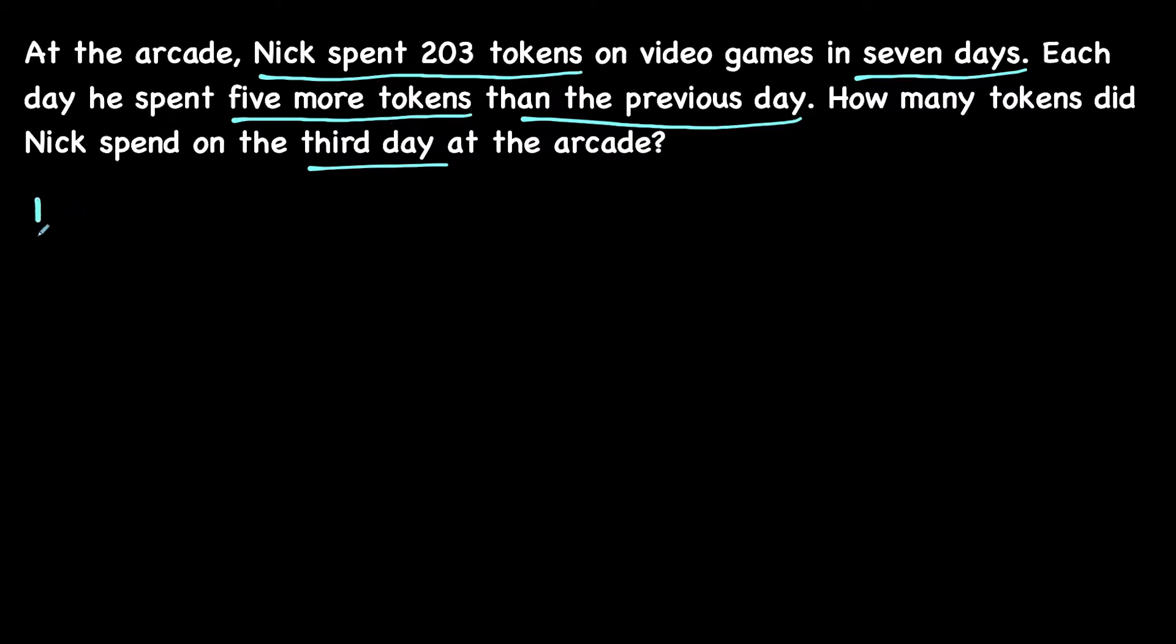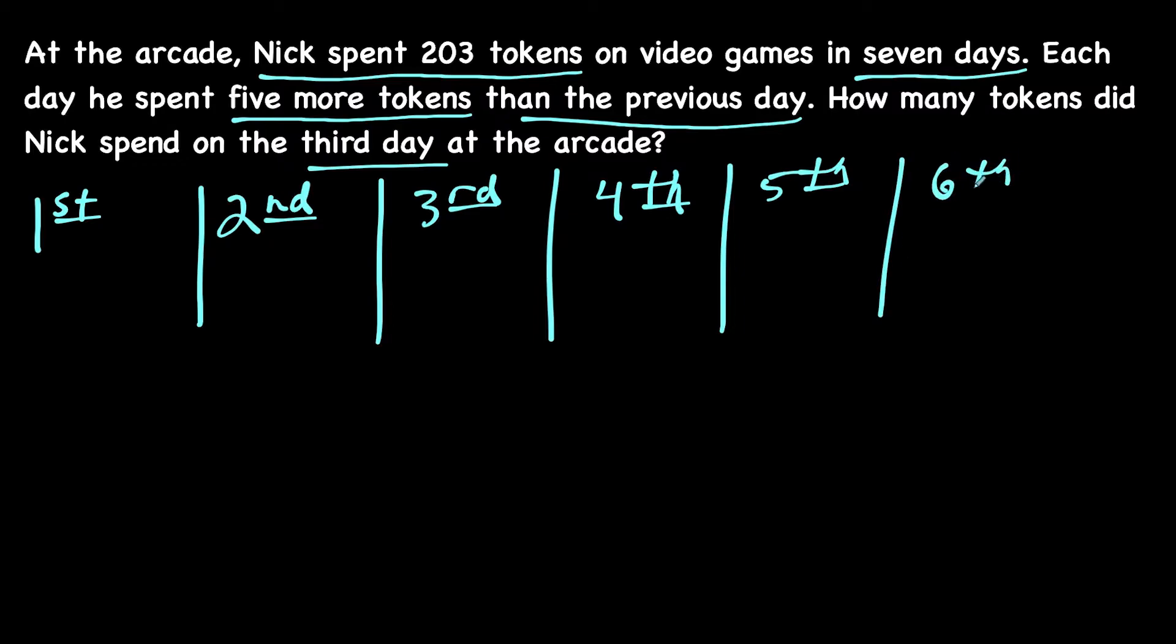For this one, what we could do is make a list to start and get an idea of what's going on. We have the first day, then the second day, and we'll do this all the way up to the seventh day. On the first day, let's say that Nick uses x tokens.